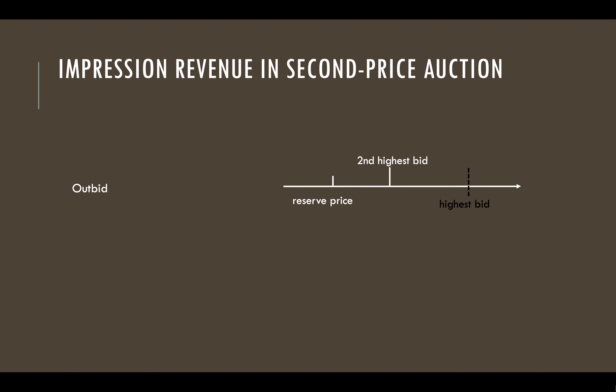In the current second price auction, if the publisher's reserve price is lower than the second highest bid, the winning advertiser pays the price of the second highest bid. In order to maximize the revenue, the publisher expects the reserve price can be higher than the second highest bid and very close to the highest bid. If the reserve price is between the second highest bid and the highest bid, the winning advertiser pays the reserve price.